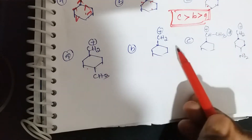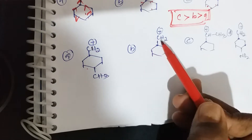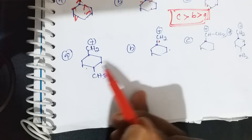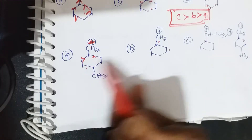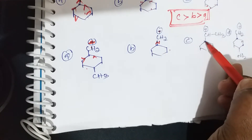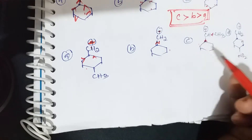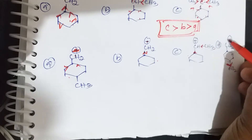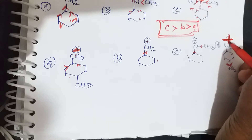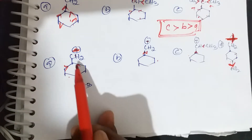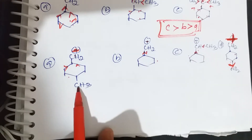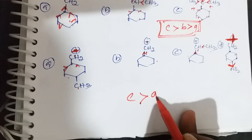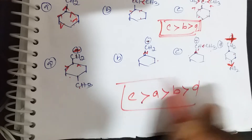Next example: all have cyclic groups. The first is primary, second is also primary, third is secondary, and fourth is primary. All cyclic groups are electron releasing, so positive charge decreases. The secondary carbocation C also has a methyl group (plus I). The last one, D, has NO2 (electron withdrawing), so positive charge increases there. Stability order: C > A > B > D.